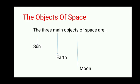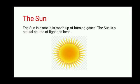The Sun is a star. It is made up of burning gases. The Sun is a natural source of light and heat. It is at the center of the solar system. These gases burn all the time, and because of that it is very hot and bright. We on Earth take its heat and light. Sunlight is also very important for plants — it helps plants to grow, and that's how all living things exist on Earth.